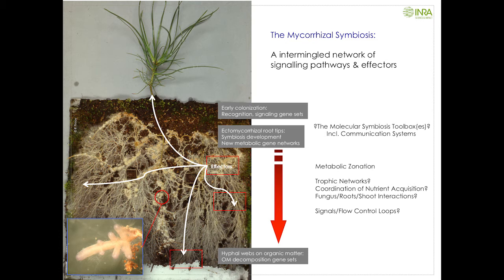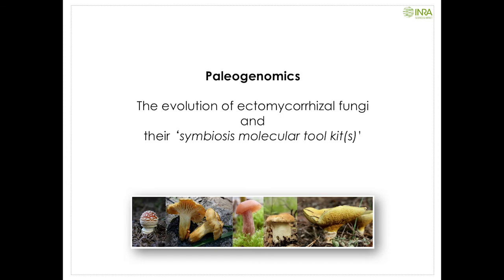As of today, we know very little about the mechanisms and signals used by these fungal compartments to coordinate their activity. We expect that there are diffusible molecules, proteins, or peptides — called effectors — which may play a role in the coordination of activities between the fungal compartment and the plant, but also between the different compartments of this fungal web. That's what we call the symbiosis toolkit: the set of genes needed for developing the interaction with the plant.